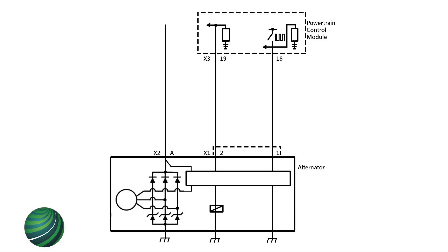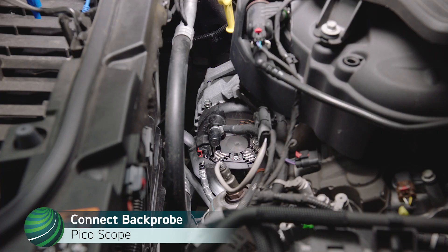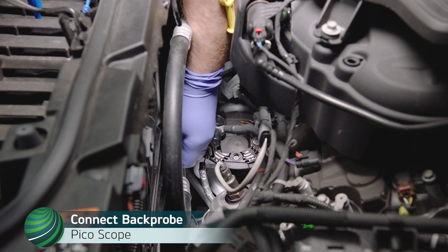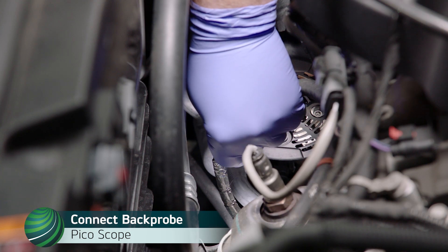Using a wiring diagram, locate the control circuit to the alternator from the powertrain control module or PCM. Insert a specialized back probe into the connector at the alternator for the control circuit.